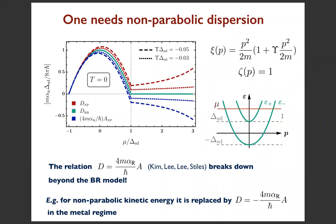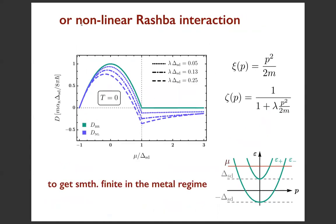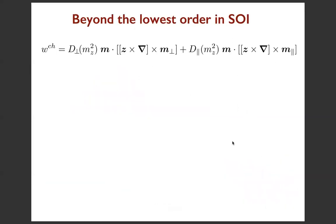This tells you that spin-orbit coupling is necessary but not sufficient to produce DMI - you may have strong spin-orbit interaction of conduction electrons and zero DMI. If you deviate from quadratic dispersion, for example by adding a quartic term, you immediately restore finite DMI in the metallic regime. What is also interesting is that before (in the pure Rashba model) D was proportional to exchange stiffness A, but with a quartic deviation in the metallic regime you get a similar proportionality but with a minus sign. Adding non-linear Rashba terms also immediately gives finite DMI in the upper band.